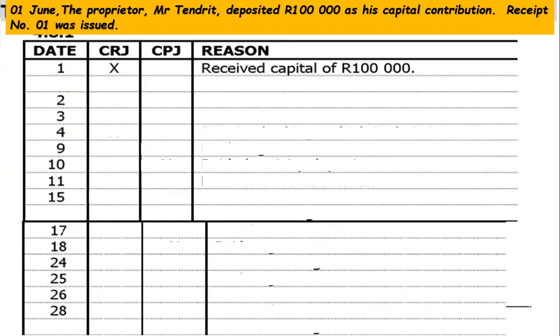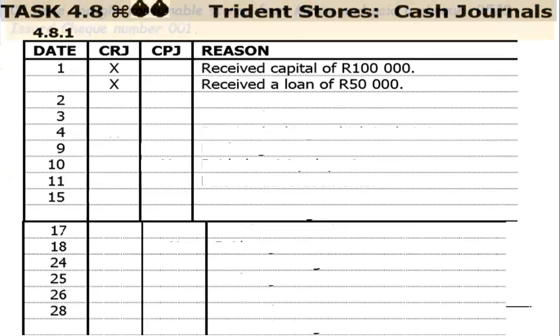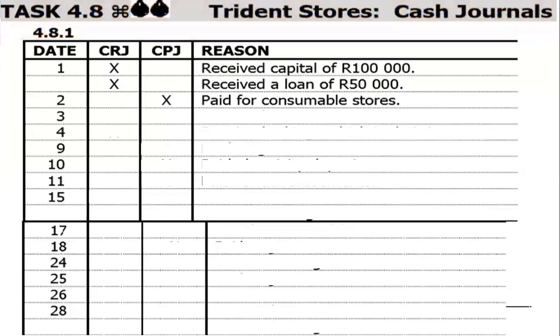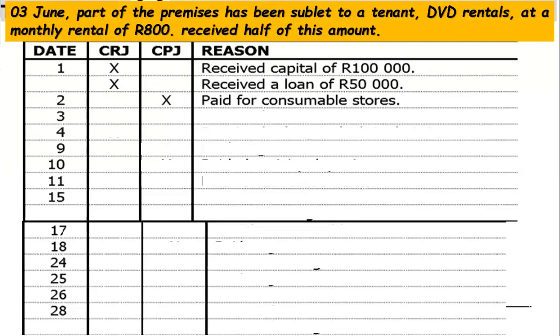On the second of June, they bought consumable stores from Macro and paid by check — 520 rands — issuing check number 001. This is a payment, so it falls under the Cash Payment Journal. That is the second transaction: bought consumable stores from Macro, paid by check 520 rands, issued a check — CPJ.